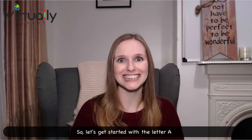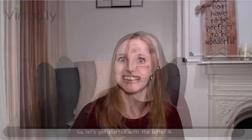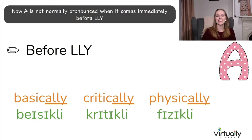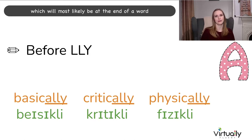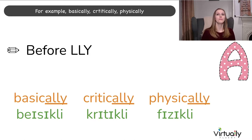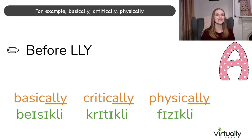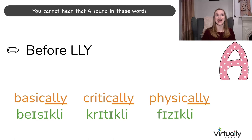Let's get started with the letter A. A is not normally pronounced when it comes immediately before LLY, which will most likely be at the end of a word. For example: basically, critically, physically. You cannot hear that A sound in these words.